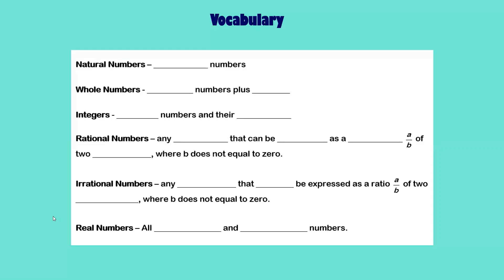We're going to do a vocabulary check. Natural numbers are counting numbers. Whole numbers are counting numbers plus zero. Integers are whole numbers and their opposites.